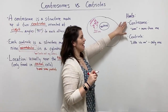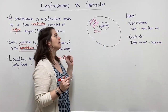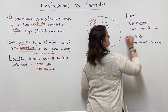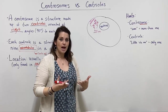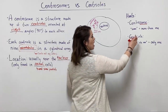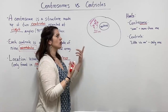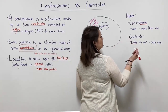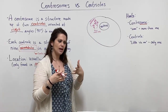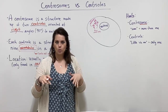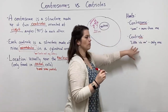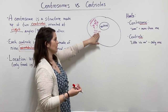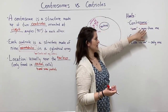If you're worried about mixing these up on a test, here are some helpful hints. For centrosome, notice that it ends in the word 'some.' In English, the word 'some' means more than one, so you can remember that the centrosome is composed of more than one centriole — specifically two centrioles. For centriole, the 'ole' ending is like the Southern expression 'little old me,' meaning just one. So the centriole is the individual piece that makes up the whole — centrioles make up the centrosome, and 'some' reminds us there's more than one involved.